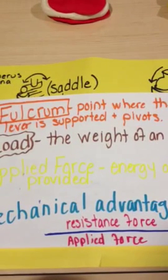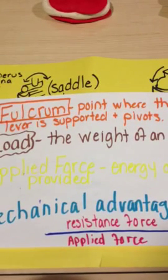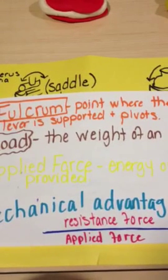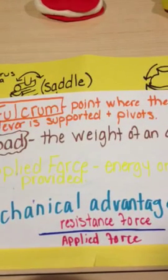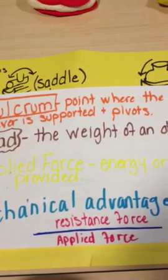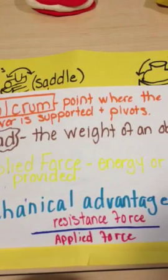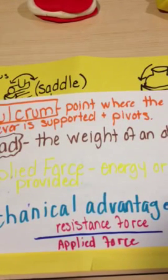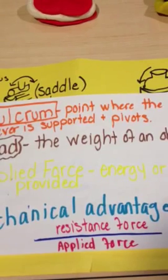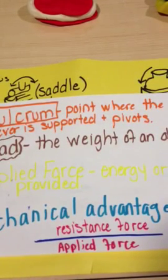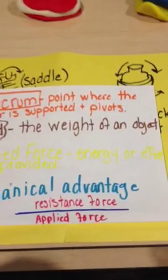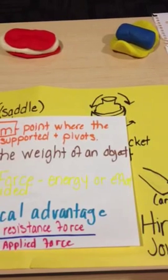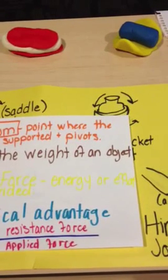Hinge joints are uniaxial as well because they consist of convex cylinders in one bone applied to a corresponding concavity in the other bone — an example is the elbow and knee joints. A pivot joint is also uniaxial and restricts movement to rotation around a single axis. Each pivot consists of a cylindrical bony process that rotates within a ring made of bone and ligament. Condylar joints are the site of junction between bones, especially one that allows motion in the bones.